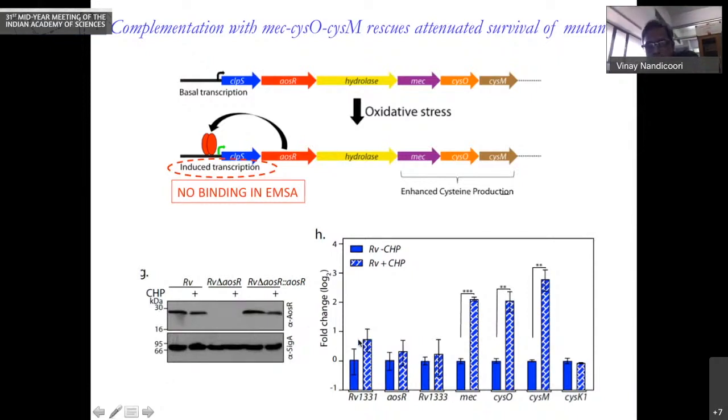However, when we did real-time PCR for the whole operon, we see that the first three genes are not getting upregulated. But the remaining genes are getting upregulated when we add oxidative stress, indicating that something else is happening. So what is that happening? The transcription factor is important and is regulating, but it's not auto-regulating its own promoter. It's regulating most probably something else.